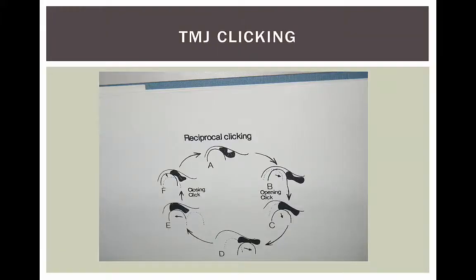Here is a cartoon of TMJ clicking, or reciprocal clicking, and I'm going to show you this on my puppet model in a couple of minutes. How this works is: the dark area is the disk, which is a cushion between the lower jaw — the mandible — which includes the condyle. That little roundish thing is the condyle, and as you go around the circle clockwise, you can see what happens to the disk.